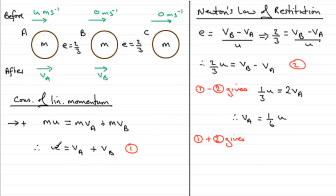One plus two gives us u plus two-thirds u, which is five-thirds u, and that equals two vb. If we divide by two, we end up with vb equaling five-sixths u. So we've got the two speeds. The speed of A is one-sixth u, and the speed of B is five-sixths u.